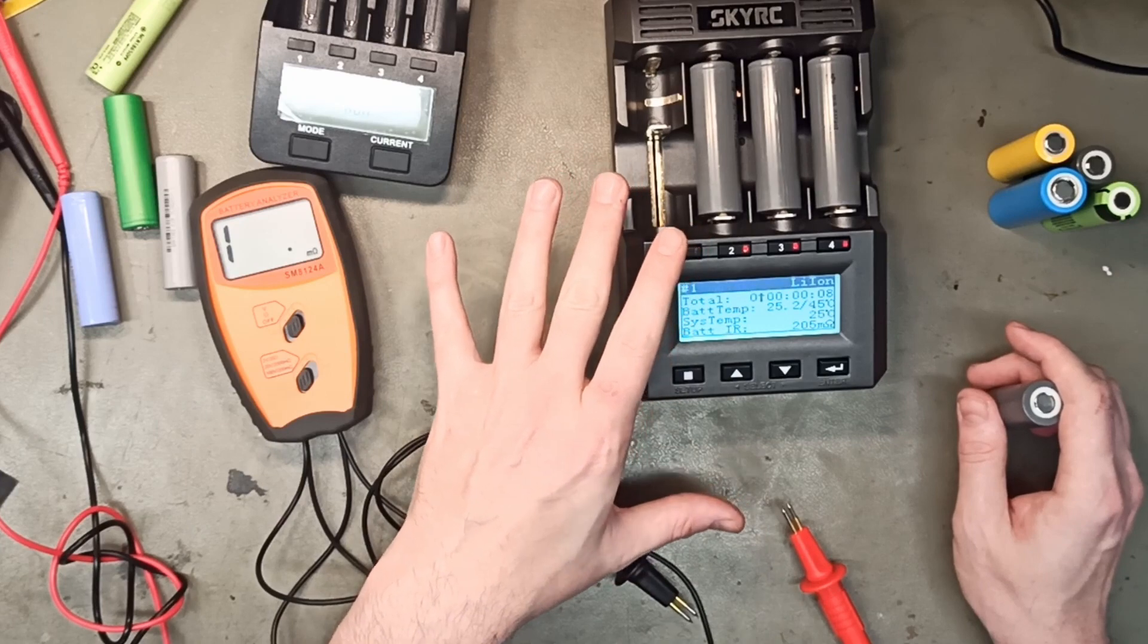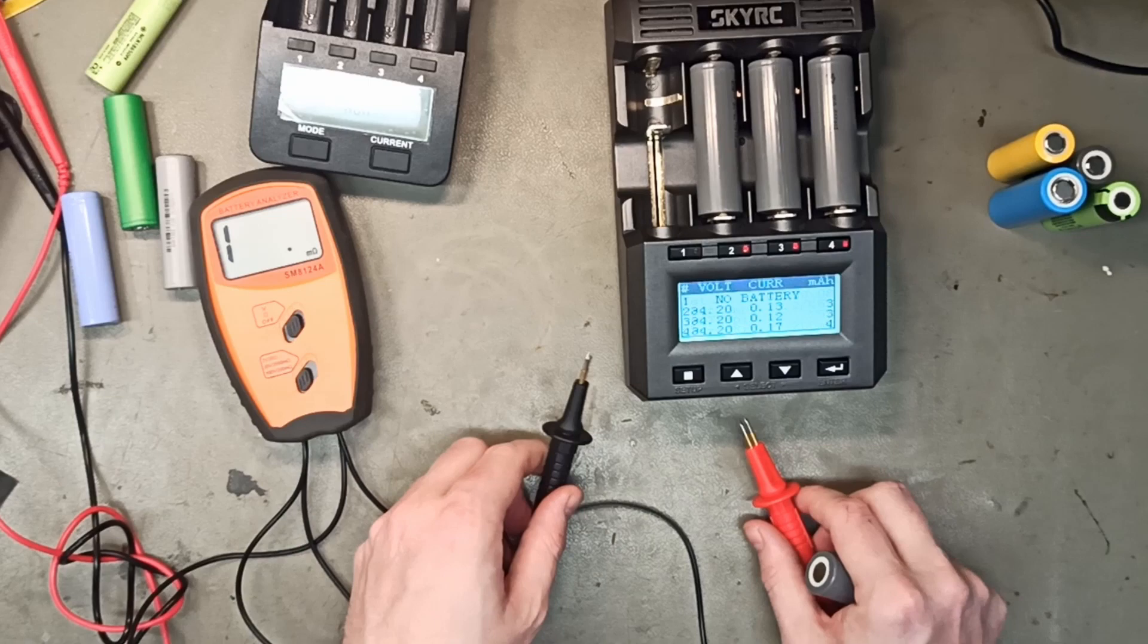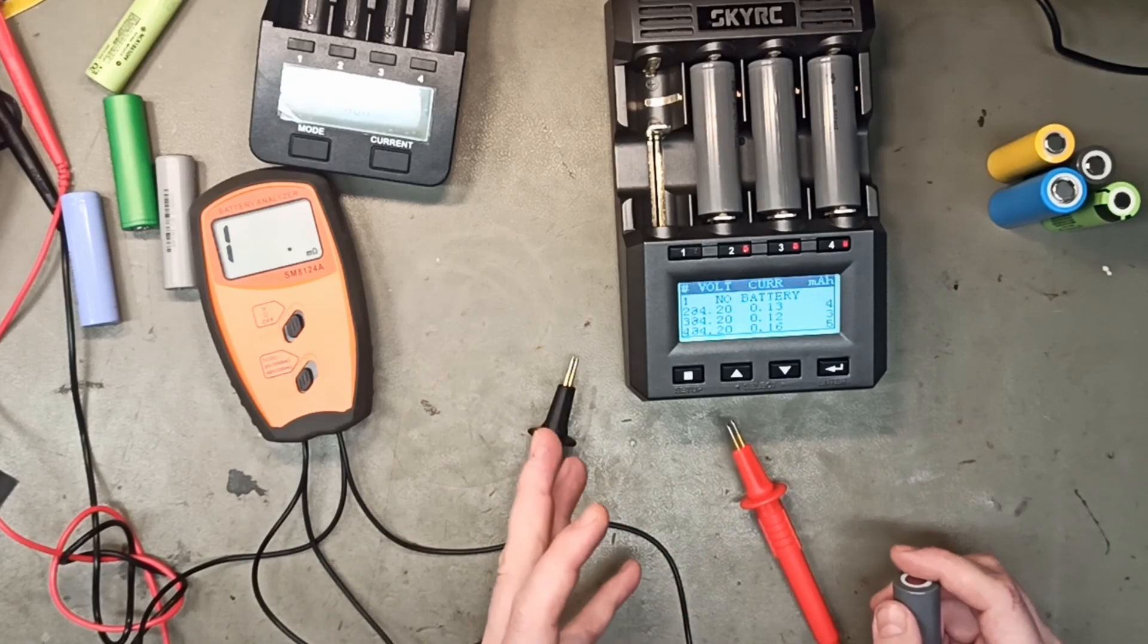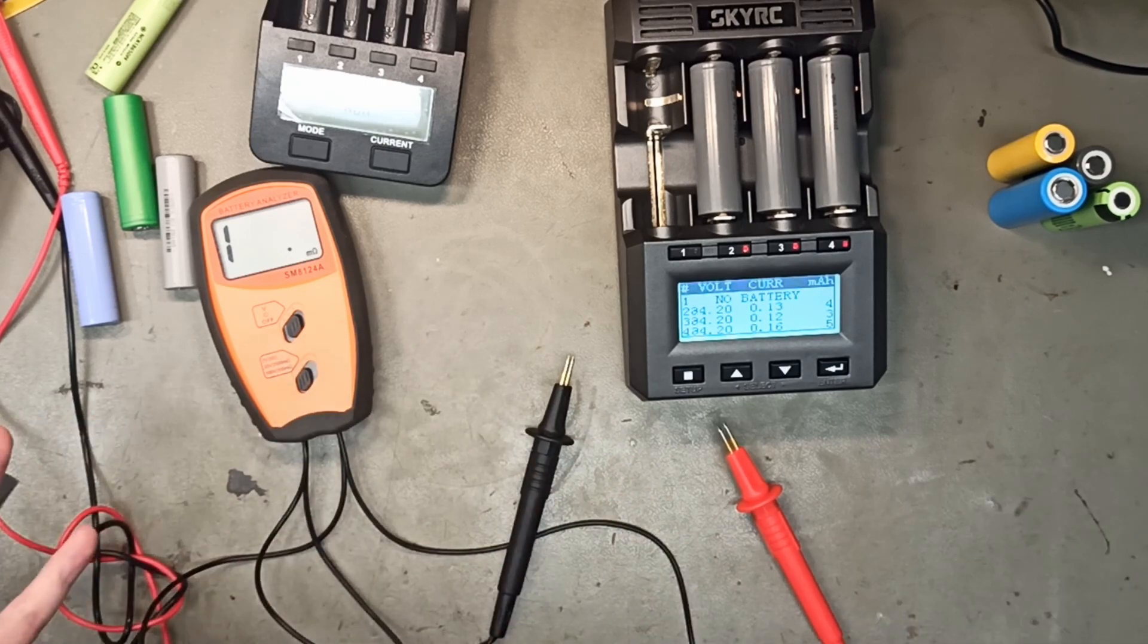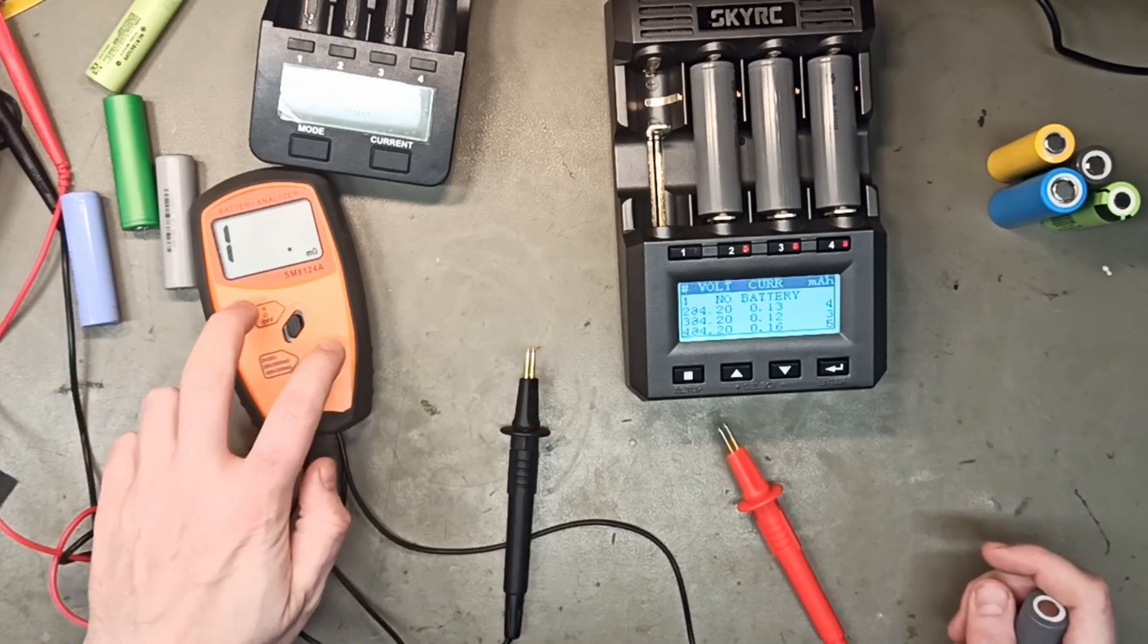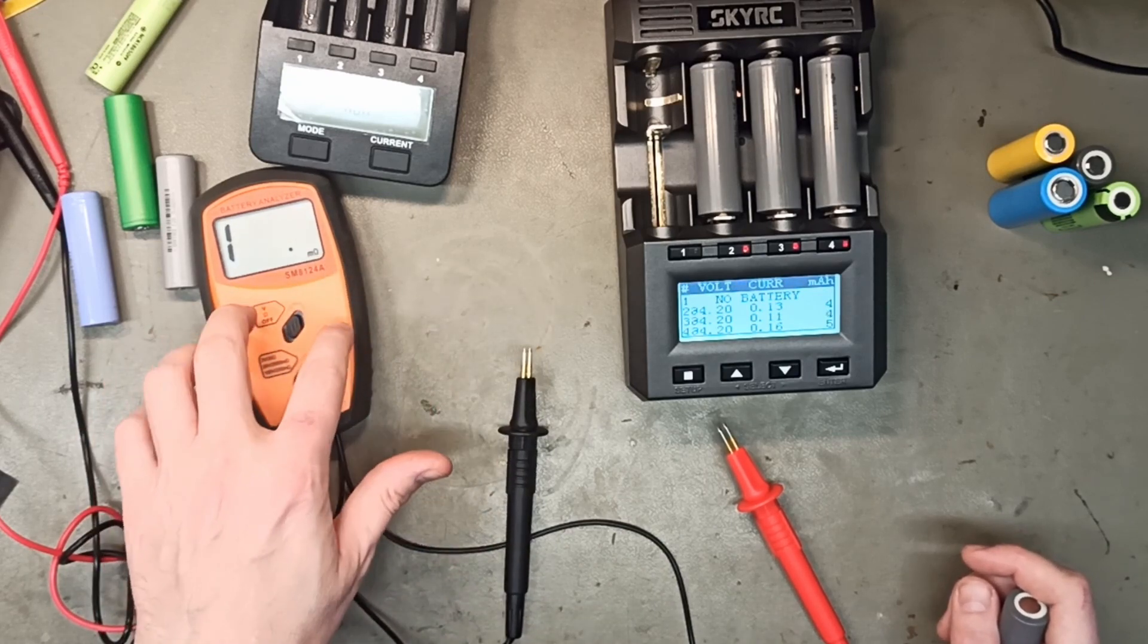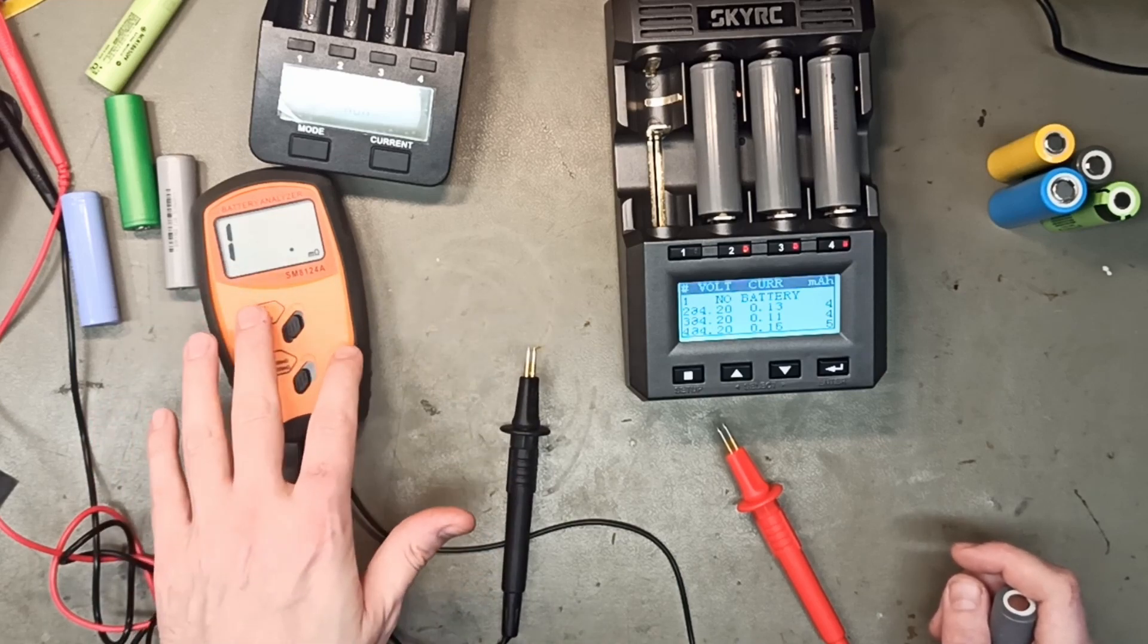You cannot test internal resistance in any other way than with a real internal resistance battery analyzer and there are a lot of them and we are going to be selling them in the spring in Sweden. So I am going to order some samples and check them against each other but I think this one is very accurate since I actually tested a lot of the cells after I measured here.